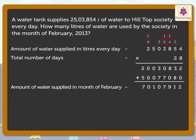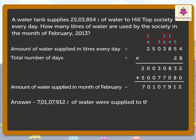Thus, 7 crore 1 lakh 7912 liters of water was supplied to the society in the month of February 2013.